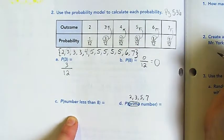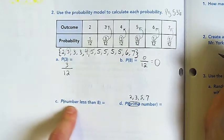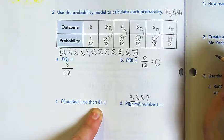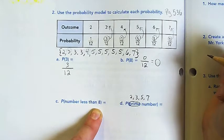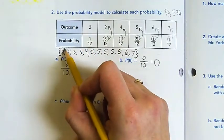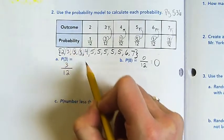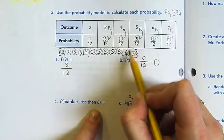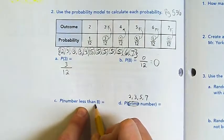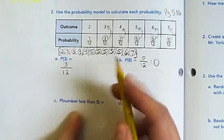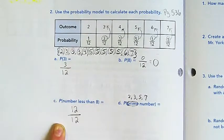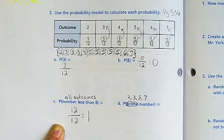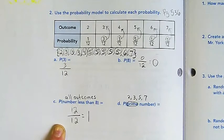Part C: The probability of picking a number less than eight. What numbers are less than eight? Two, three, all the threes, four, all the fives, six, and seven. That would be twelve out of twelve, which is one whole. Great job. All of the outcomes are less than eight, which is why the probability is one whole.